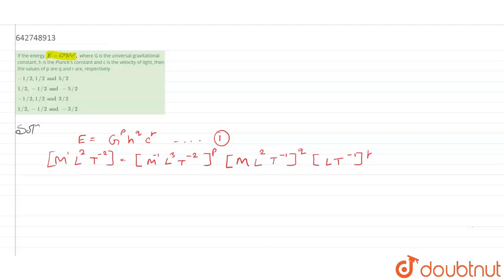As we know the solution, the way to solve it, it will become m power minus p plus q, l power 3p plus 2q plus r.